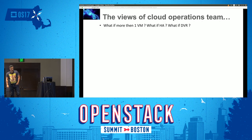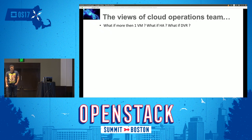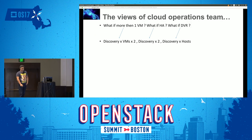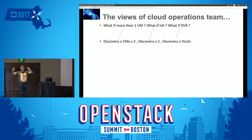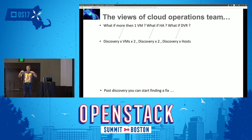Till now we were just talking about one VM. Let's say your environment has more than that, and let's say it has a feature called HA. What happens there? And let's say your environment is working with distributed virtual routing, not the standalone router in Neutron. Discovery time multiplies by number of VMs, multiplied by HA — multiplied by two because there is a couple of DHCP servers backing each other up, one active, one standby. You need to find which one is active. So this is what I call discovery, and discovery is important because it's the baseline for troubleshooting. Post-discovery comes actually fixing the problem.